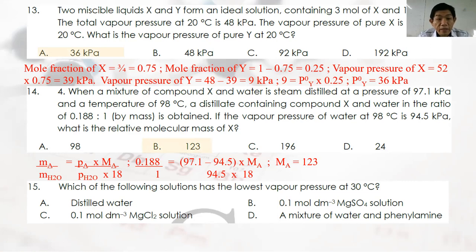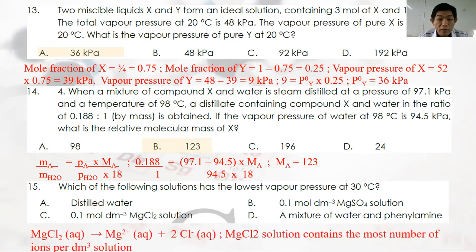Question 15: Which solution has the lowest vapor pressure at 30°C? The one with the lowest vapor pressure has the strongest intermolecular forces. The strongest intermolecular forces here involve magnesium chloride, as it has the most ions per dm³ of solution.